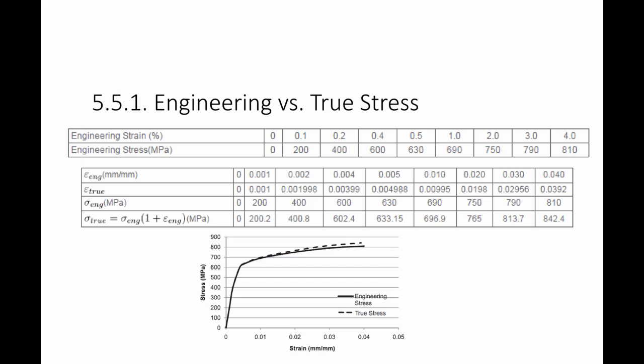The engineering stress is the same as input. The true stress equals the engineering stress multiplied by 1 plus epsilon engineering, so they are almost the same at lower values. As strain values get higher, they start deviating and the true stress becomes a little bit higher, because it's the same force divided by a smaller area. You can see that the true stress-strain curve is slightly higher than the engineering stress-strain curve.